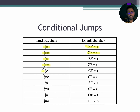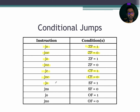The next conditional jump is JC, which stands for jump if carry, for which the condition is carry flag equals 1. Next is JNC, which stands for jump if not carry; the condition for JNC is CF equals 0. Next is JS, which stands for jump if sign; the condition is sign flag equals 1. The next conditional jump is JNS, where JNS stands for jump if not sign; the condition is sign flag equals 0.